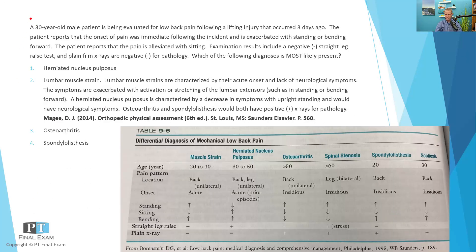The correct answer, which you can ascertain from the information in the question, is lumbar muscle strain. The history lines up nicely — we have a lifting injury with pain that was onset immediately following the injury, so a very acute pain onset. We don't have any description of neurological symptoms, which would be characteristic of herniated nucleus pulposus. The pain is exacerbated both with standing and bending forward because standing activates the back extensors while bending forward stretches them. A strained muscle would be upset with both activation and stretching, confirming lumbar muscle strain as the correct answer.